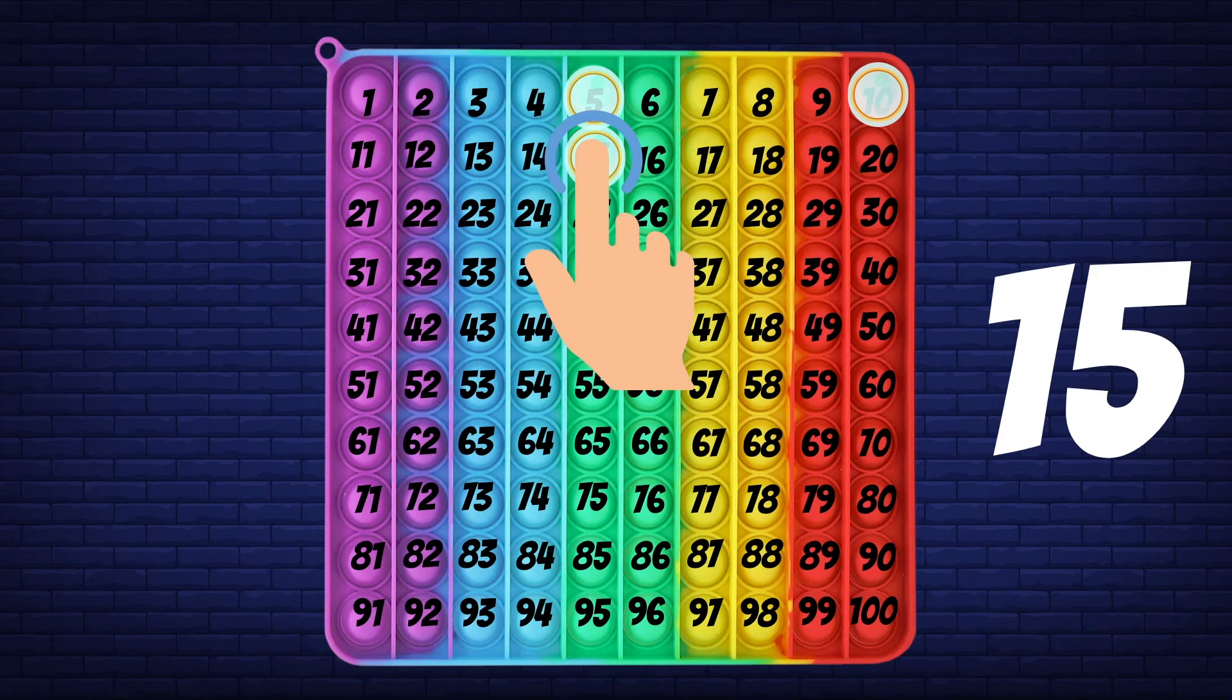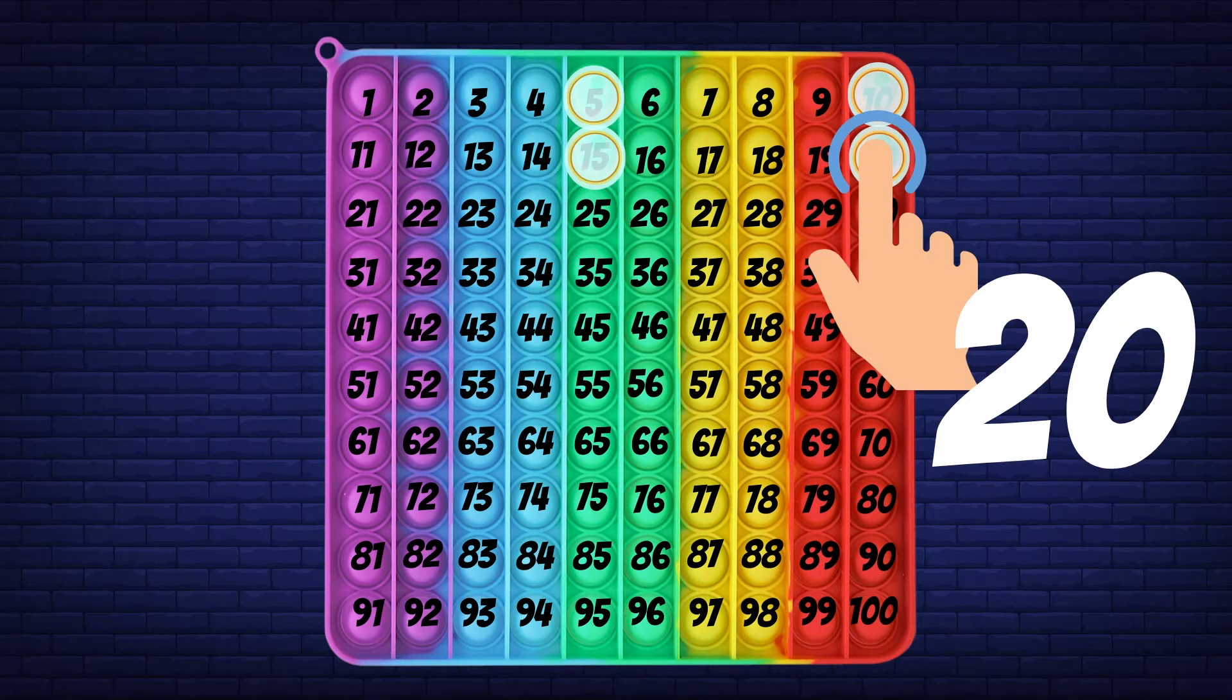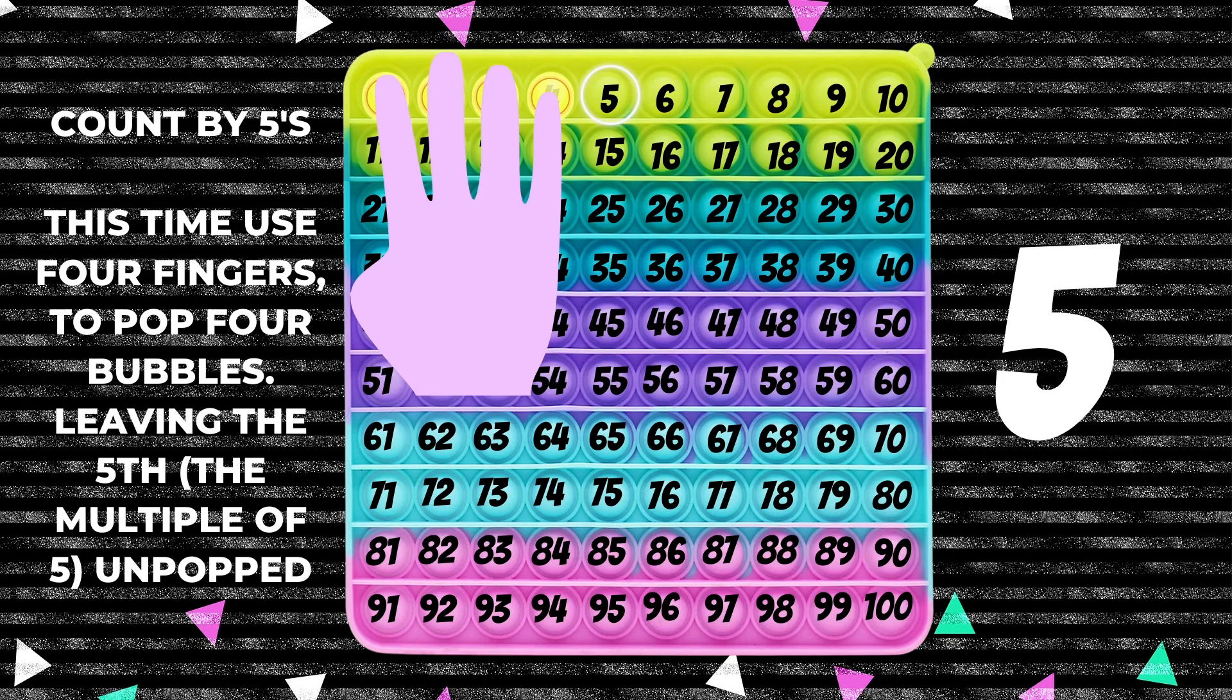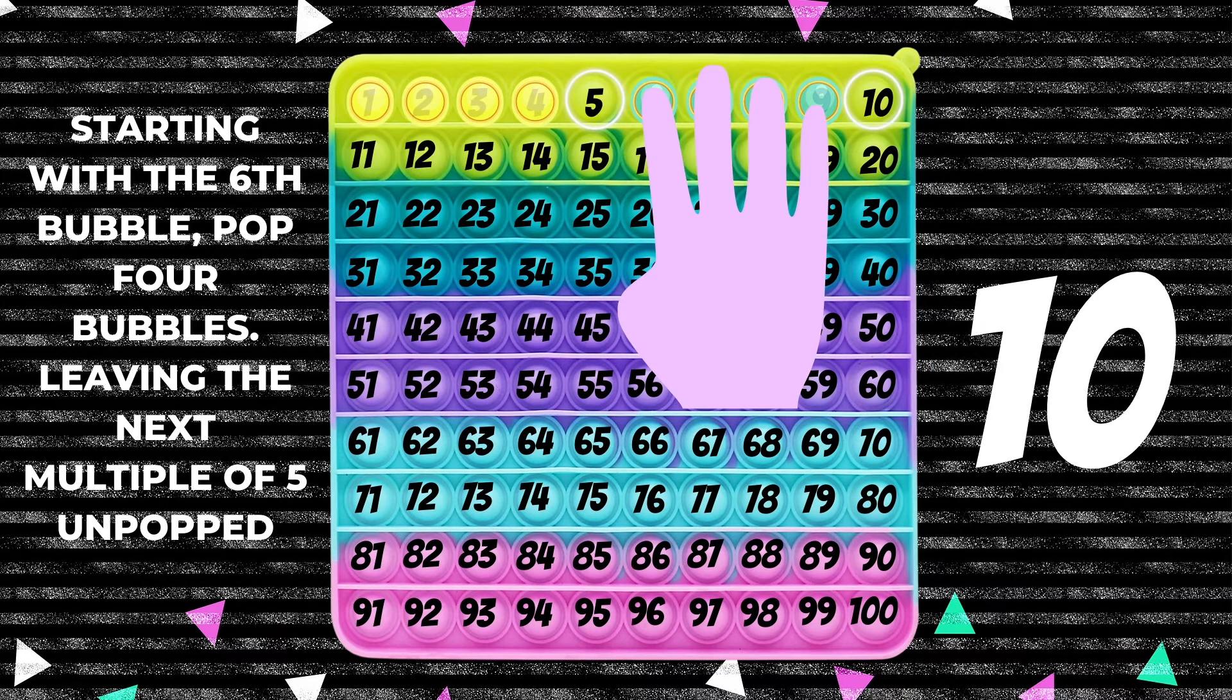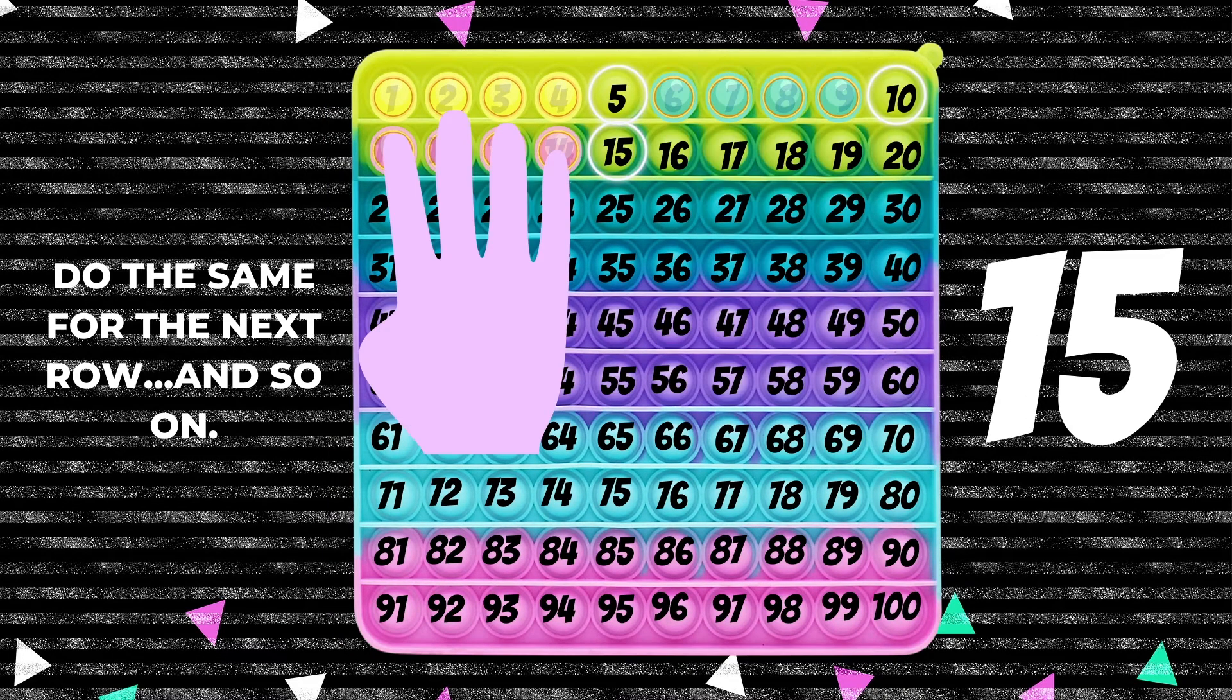Or you can use four fingers on one hand and pop four bubbles at a time, leaving the fifth bubble unpopped. And then that way when you finish the pop-it, you'll have your two rows with your fives in it.